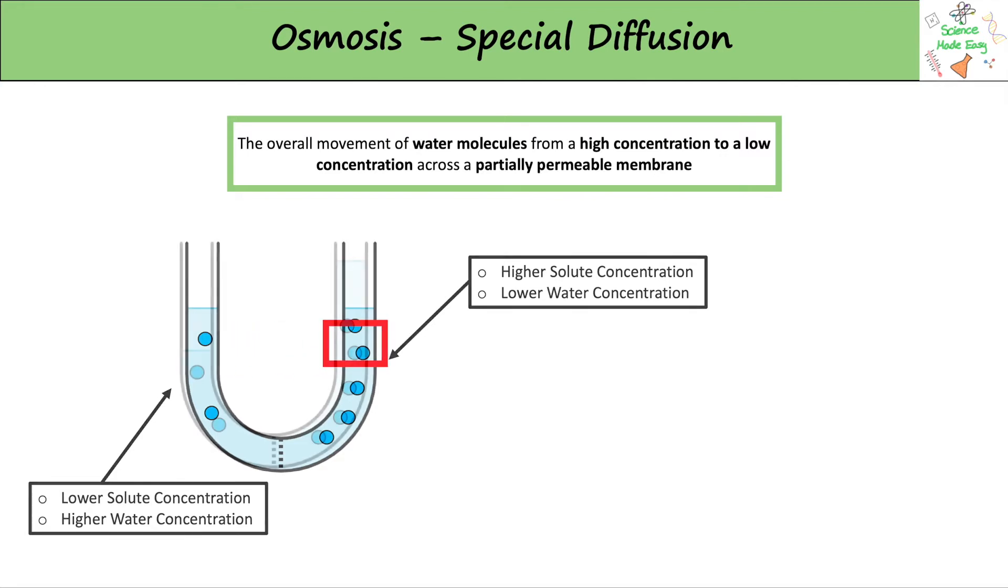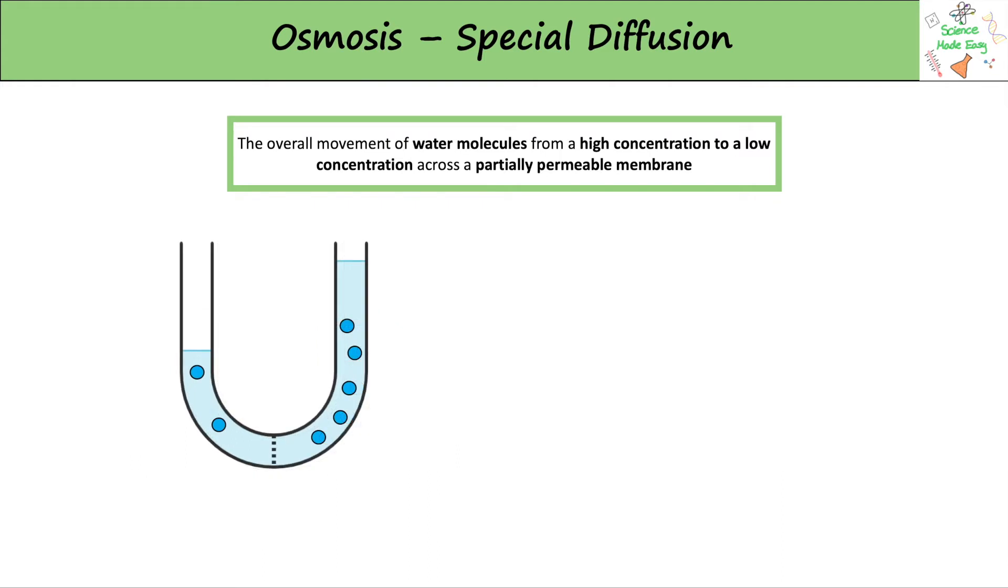This is the diagram after osmosis has happened. The water has moved to the side with a higher solute concentration to try and balance the concentration out on each side. There is now a roughly equal amount of water to solute on each side.